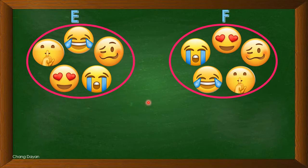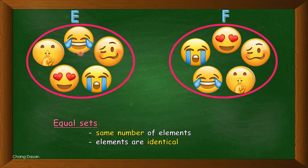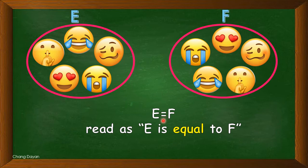Next, we have set E and set F. These two sets are composed of emojis. We consider this as an equal set. As you see, they have the same number of elements — one, two, three, four, five — and the elements are identical. The same emojis appear in both sets. So we use the equal sign: E is equal to F, since they have the same number of elements and they are identical.